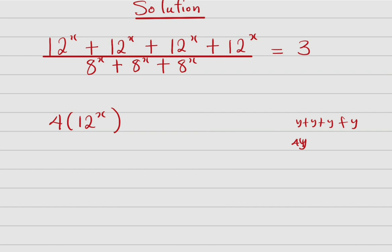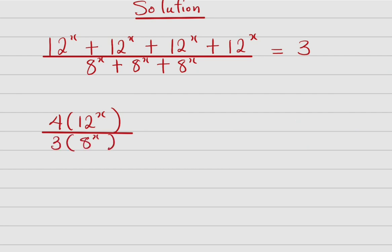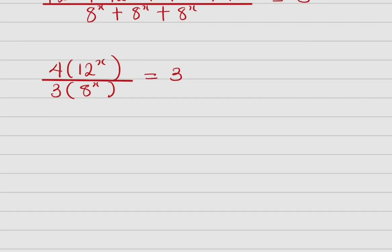The same thing applies to the denominator — it appears in three places, so it's going to be 3 times 8 raised to power x. This means the whole expression equals 3. So we now have 4 over 3 on one side.